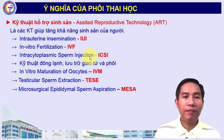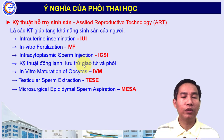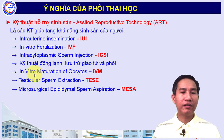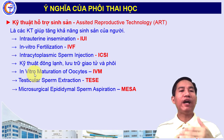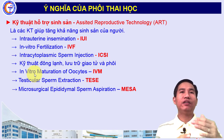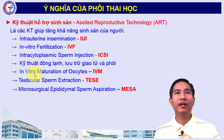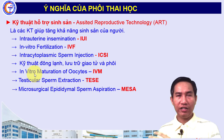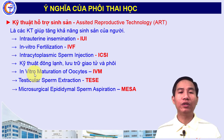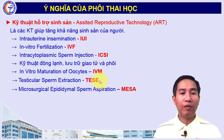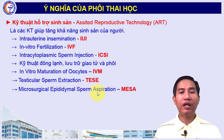ICSI là phương pháp tiêm tinh trùng vào bào tương của tế bào noãn. Kỹ thuật đông lạnh, lưu trữ tinh trùng, trứng và phôi cũng được sử dụng. IVM là phương pháp trưởng thành trứng trong ống nghiệm: khác với IVF dùng thuốc kích thích buồng trứng để trứng trưởng thành trong cơ thể, IVM lấy trứng non ra rồi nuôi dưỡng trong ống nghiệm đến khi trưởng thành. Đối với vô sinh nam, có thể thực hiện phẫu thuật tinh hoàn hoặc vi phẫu thuật ống dẫn tinh để lấy tinh trùng.